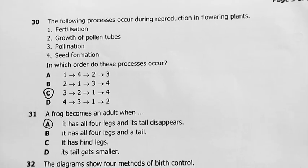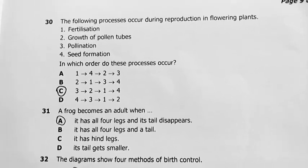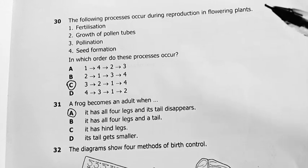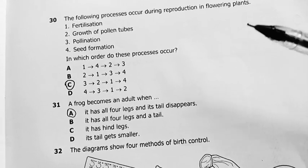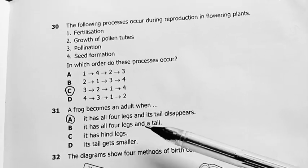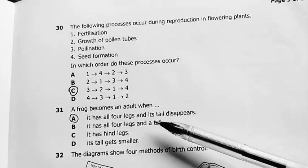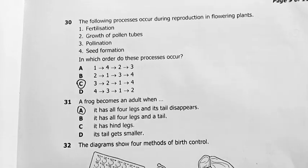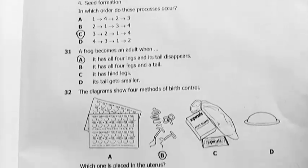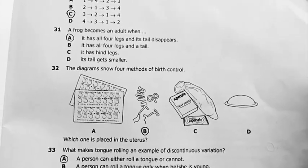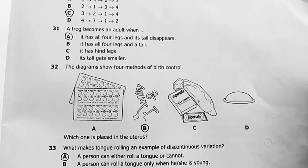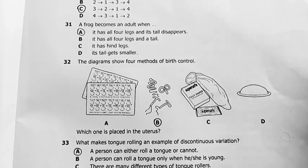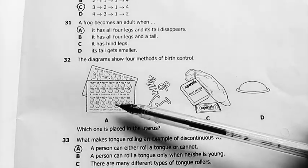Question 31: a frog becomes an adult when it has four legs and the tail disappears. The answer there is A. Number 32: the diagrams show four methods of birth control — pills, IUD devices, condoms, and the diaphragm. Which one is placed in the uterus? B.